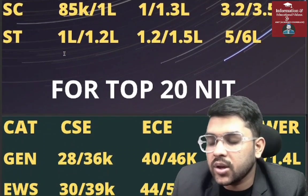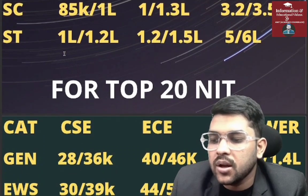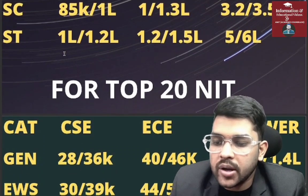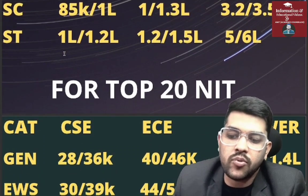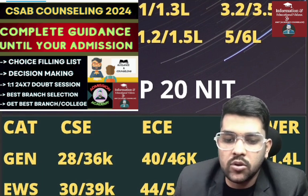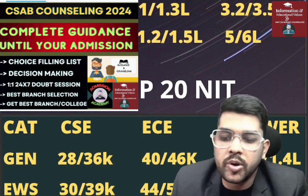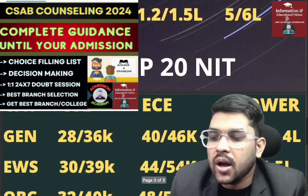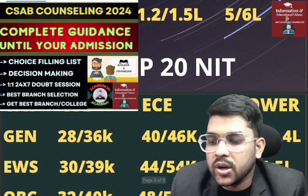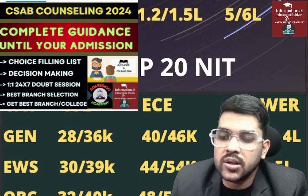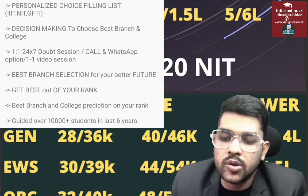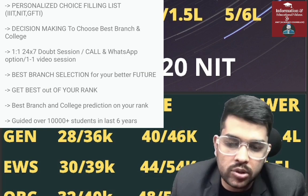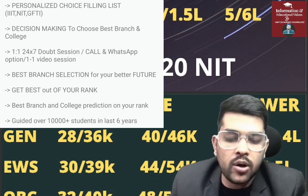For top 20 colleges, here is the information. General category: 28,000 to 36,000 for CSC/EC, 1.4 lakh lower. EWS: 30,000 to 39,000 for CSC/EC, 44,000 to 54,000 lower, 1.2 to 1.5 lakh. All are CRL ranks.